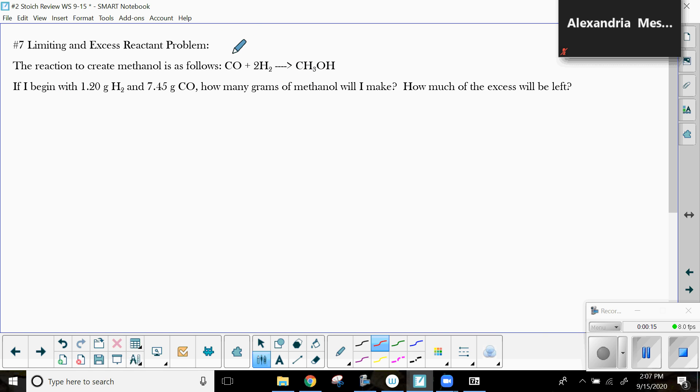So here's my balanced chemical reaction, and I started with 1.20 grams of hydrogen and 7.45 grams of carbon monoxide. Step one, I've got to figure out which one is my limiting reactant, or which one is going to limit the amount of product I make.